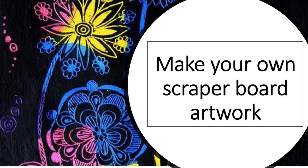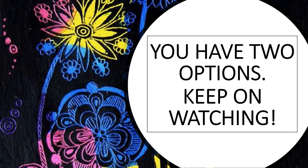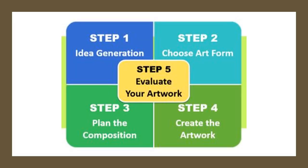Now for the part you've been waiting for — make your own scraper board artwork. Planning in five quick steps. Step one: generate an idea — we want to make a scraper board artwork. Step two: choose your art form, in this case etching. Step three: plan the composition — what are you going to draw? In this case it's going to be a still life artwork, or it could be anything else. Step four: create the artwork, remember to work very neatly. Step five: evaluate your artwork — look at it again and decide what you'll do differently next time, what you love most about this artwork, and what you learned.